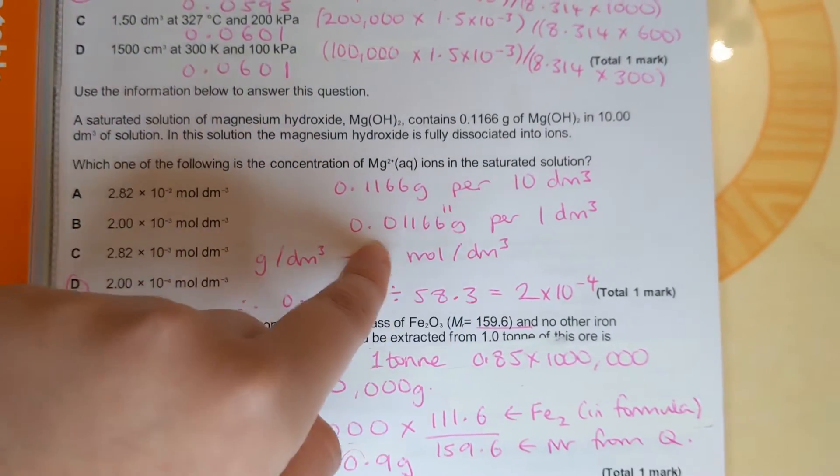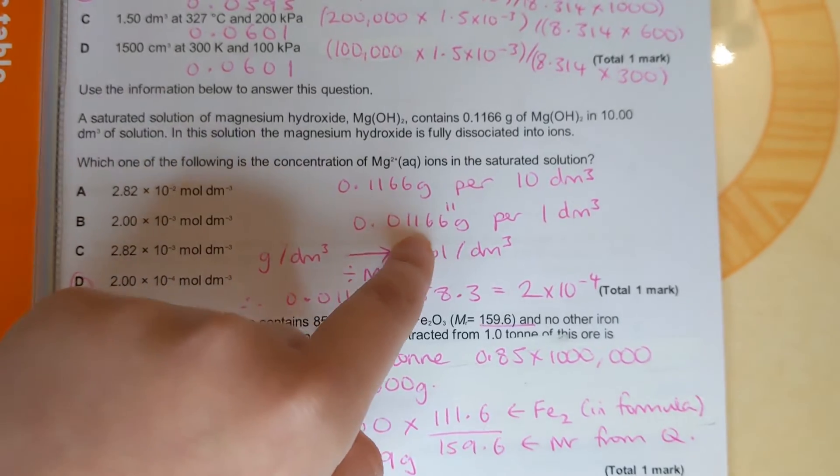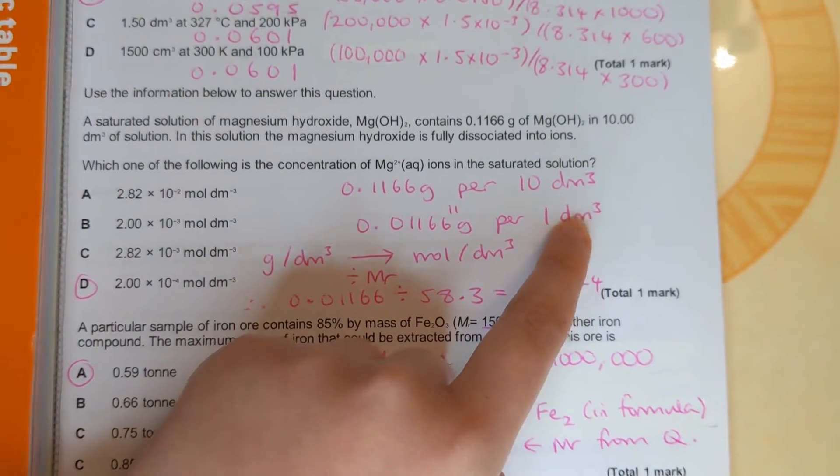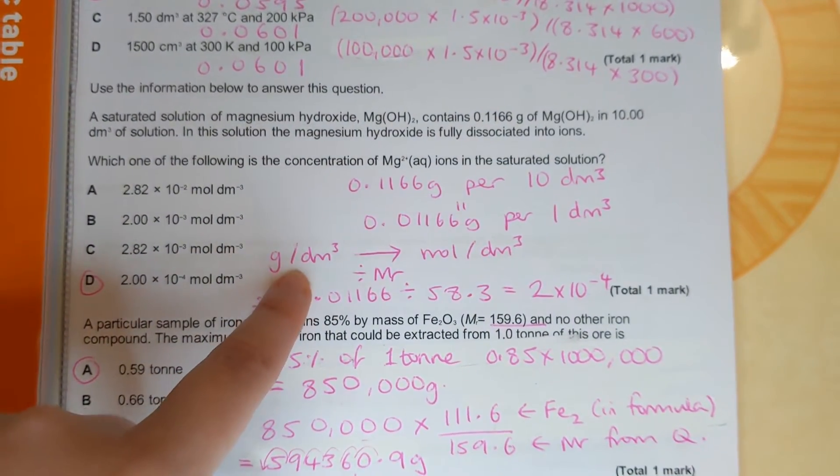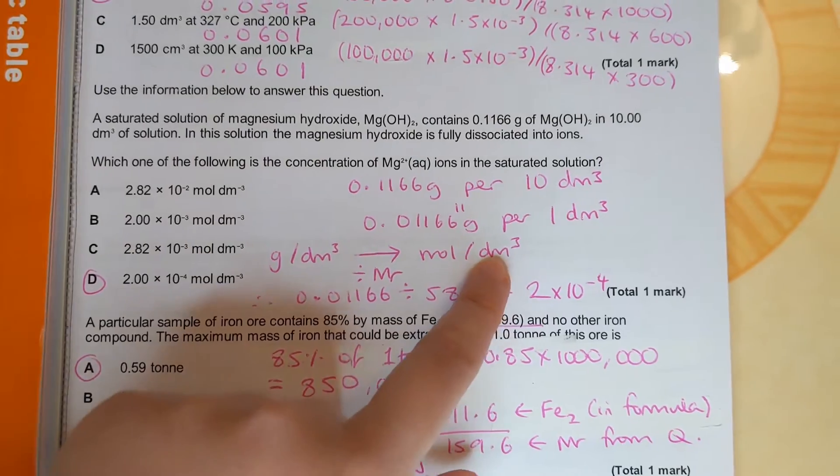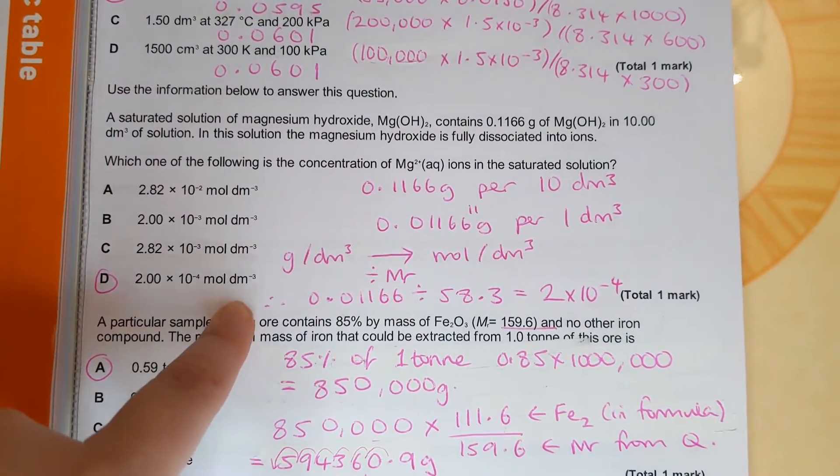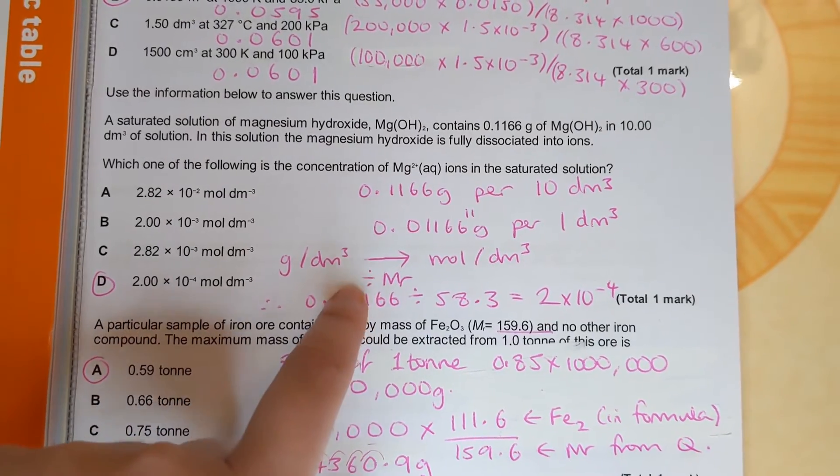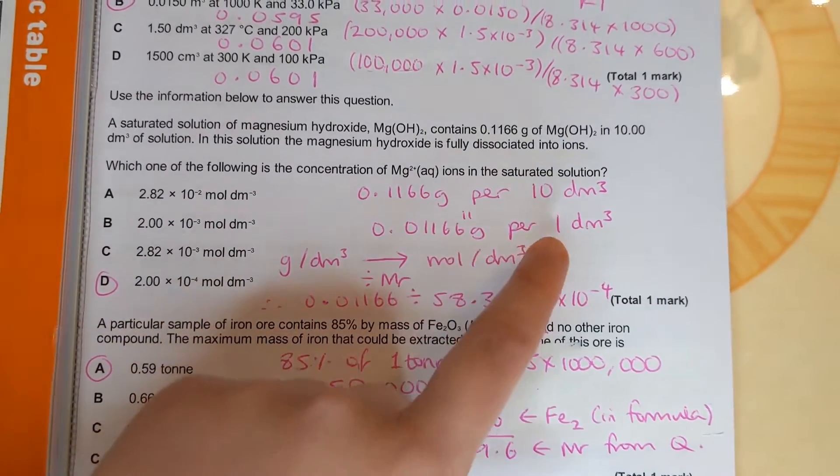And to get from grams per decimetre cubed to moles per decimetre cubed, which is what the units of concentration and the answers are in, we divide by the mr. So I've divided my mass per one decimetre cubed divided it by the molar mass of magnesium hydroxide.